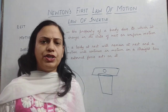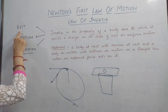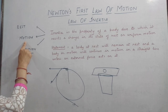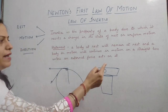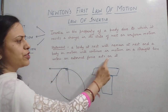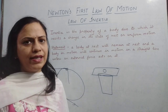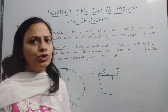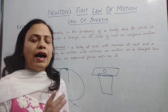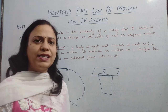So those are the three types of inertia. Now, coming to the statement of the first law: a body at rest will remain at rest — explained by inertia of rest — and a body in motion will continue in motion in a straight line — explained by inertia of motion, since direction also tends to remain the same — unless an external force acts on it. This is Newton's first law, also known as the law of inertia.